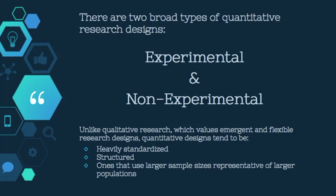Experimental research is when a researcher is able to manipulate the independent variable to identify a cause and effect relationship. This typically requires the research to be conducted in a controlled environment, with one group being placed in an experimental group while the other is placed in a control group.